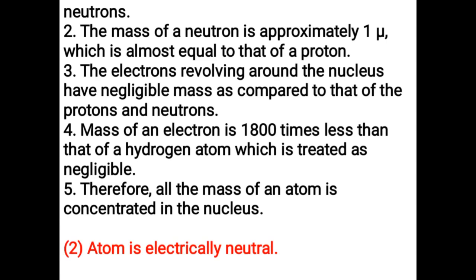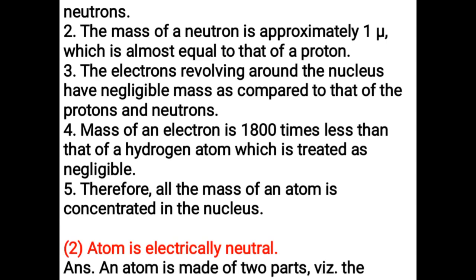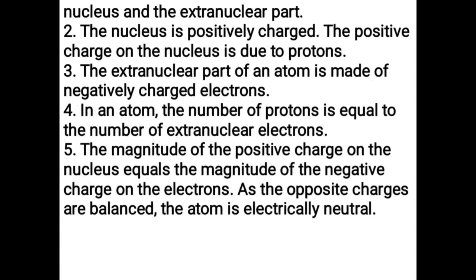An atom is electrically neutral. An atom is made of two parts: the nucleus and the extra-nuclear part. The nucleus is positively charged due to protons. The extra-nuclear part consists of negatively charged electrons. In an atom, the number of protons equals the number of extra-nuclear electrons. The magnitude of the positive charge on the nucleus equals the magnitude of the negative charge on the electrons. As the opposite charges are balanced, the atom is electrically neutral.